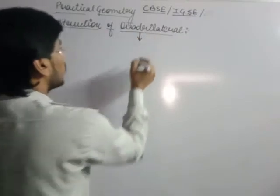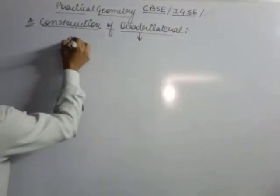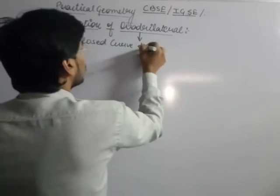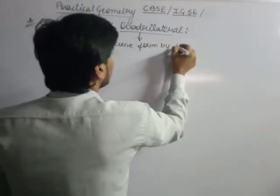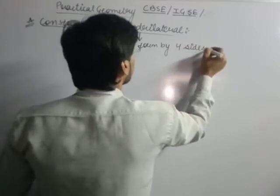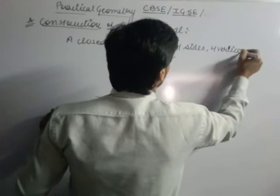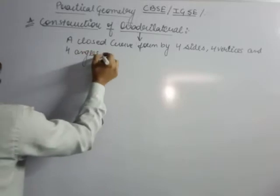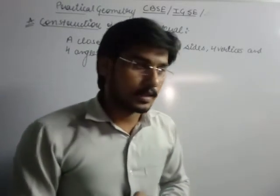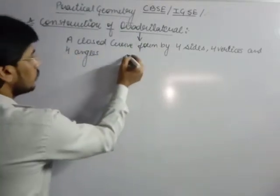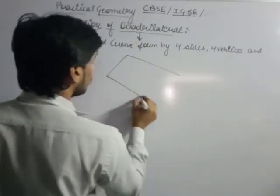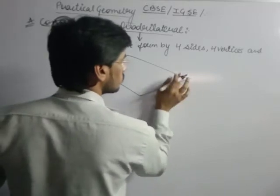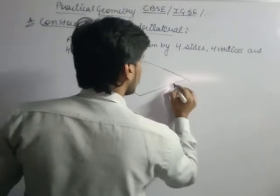So I am going to tell you what is a quadrilateral. Quadrilateral means a closed curve formed by four sides, four vertices, and four angles. This is known as a quadrilateral.